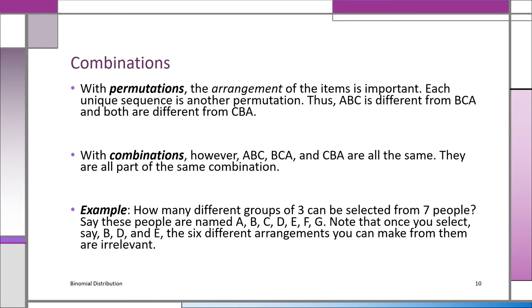With combinations, on the other hand, ABC, BCA, CBA, it's all the same thing. We all have the same combination of A, B, and C in them. So for example, I ask you, how many different groups of three can be selected from seven people? So we're going to call these people A, B, C, D, E, F, G. We have seven people. And we wonder how many different groups of three. Of course, once you select B, D, and E, the six different ways you can arrange B, D, and E is irrelevant. It's still B, D, and E. Different kind of with cards, of course. But if you have a hand of five cards and you have four aces, nobody cares how they're arranged. You can say, I've got four aces in my hand.